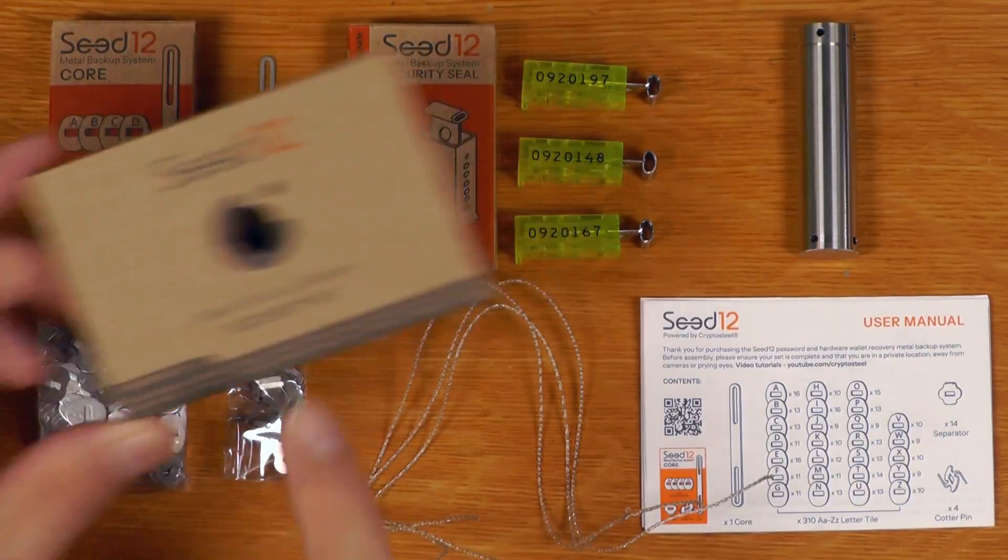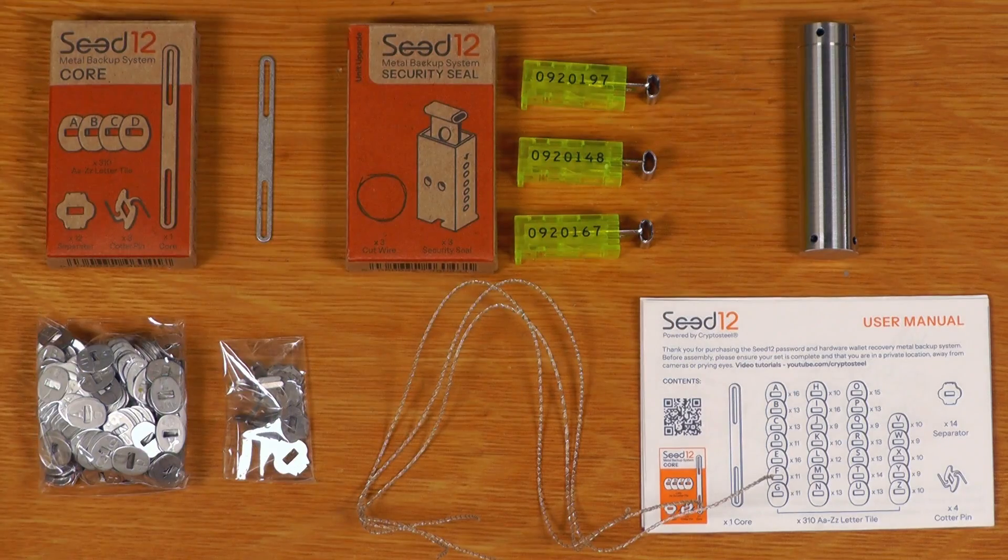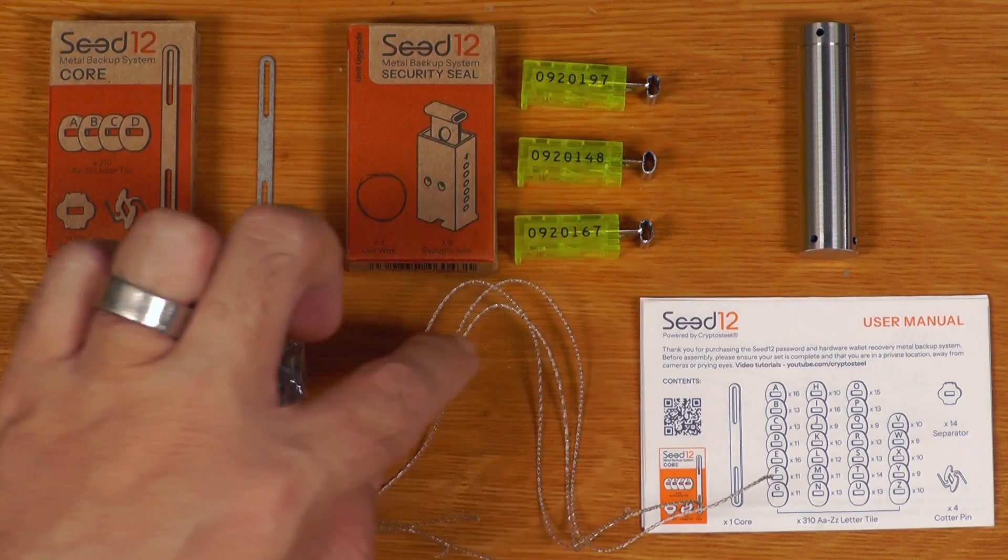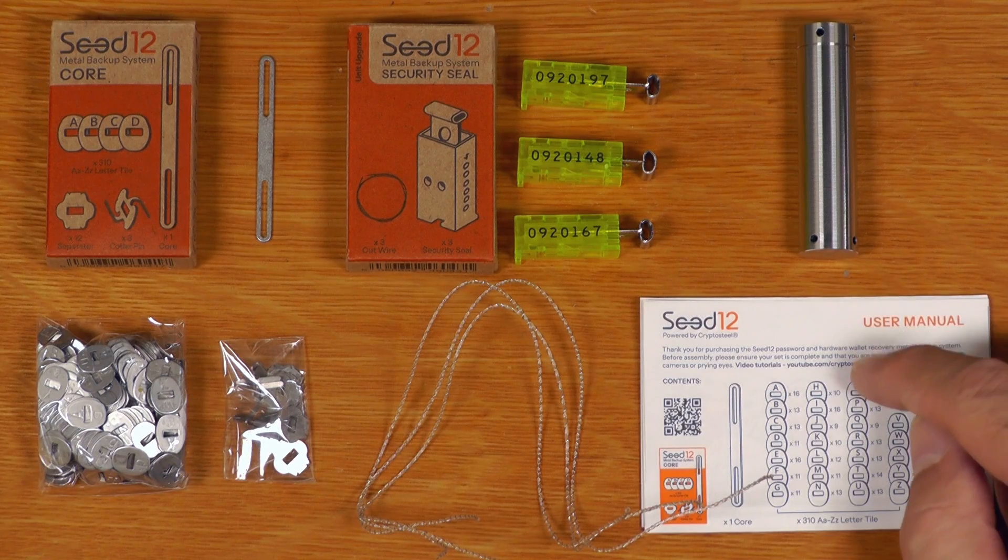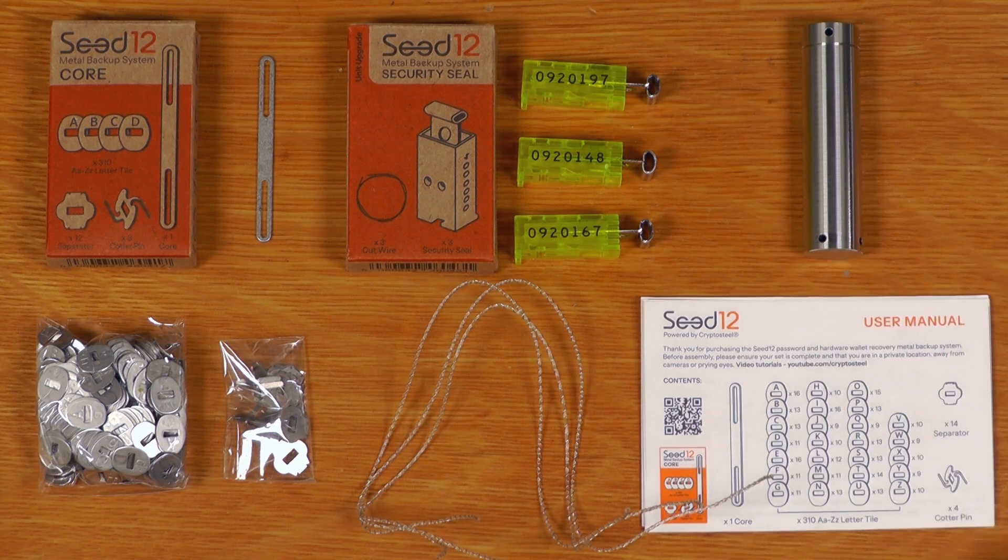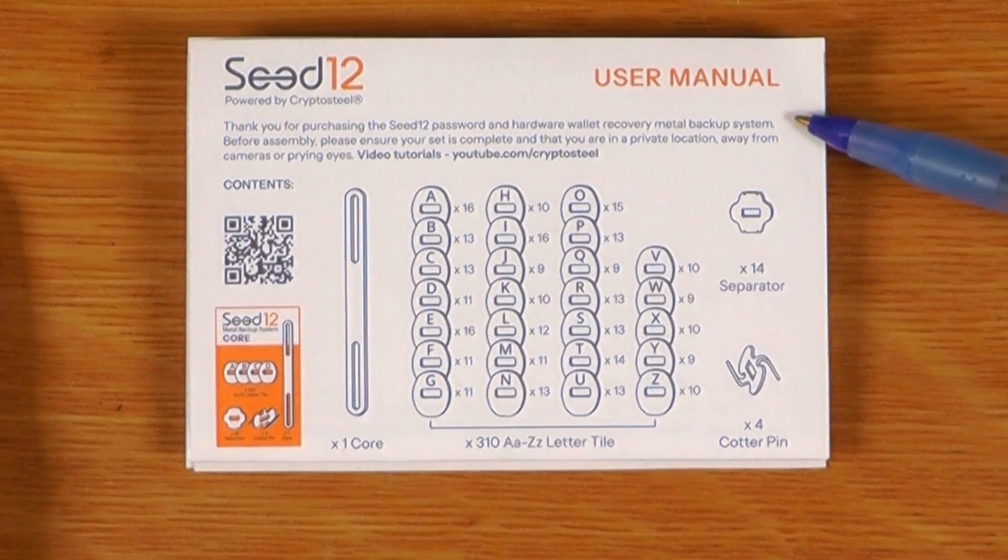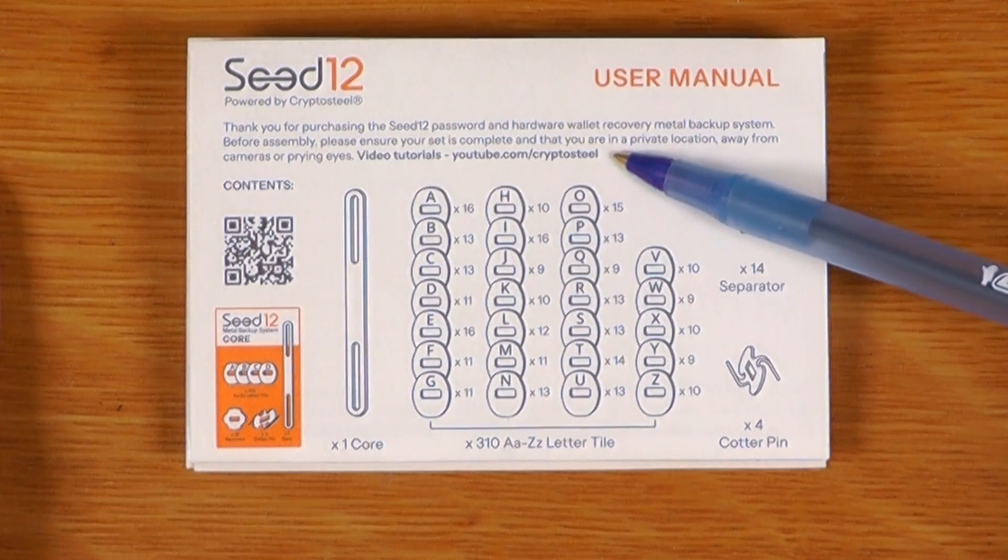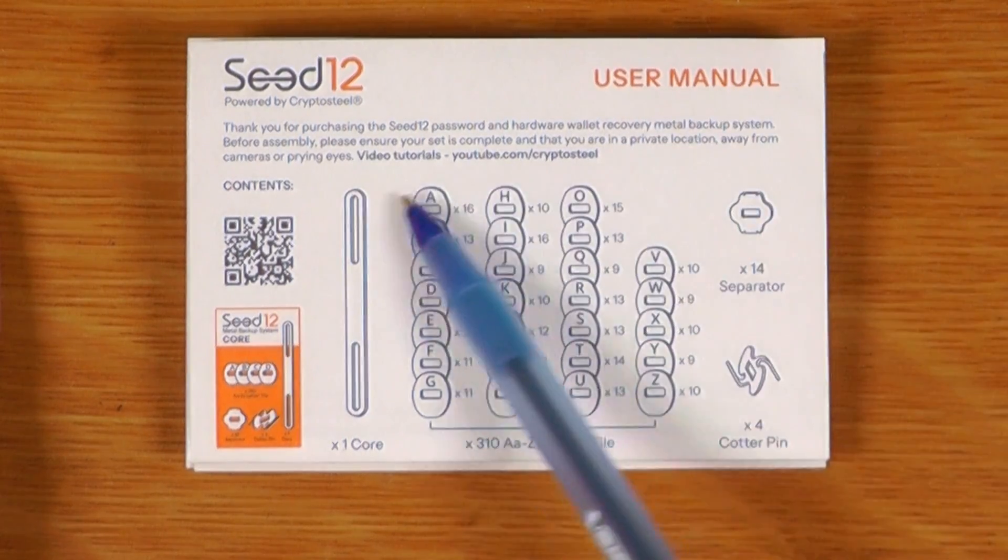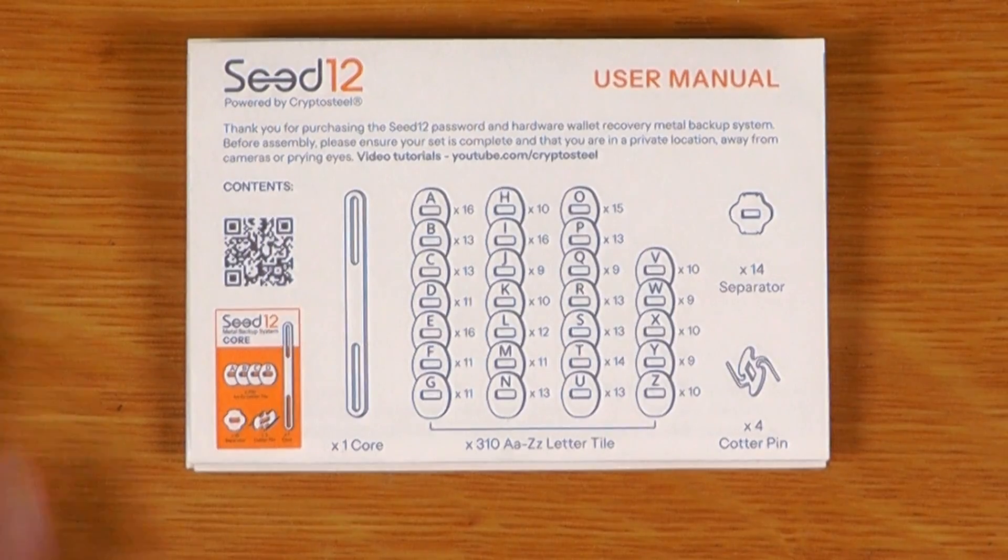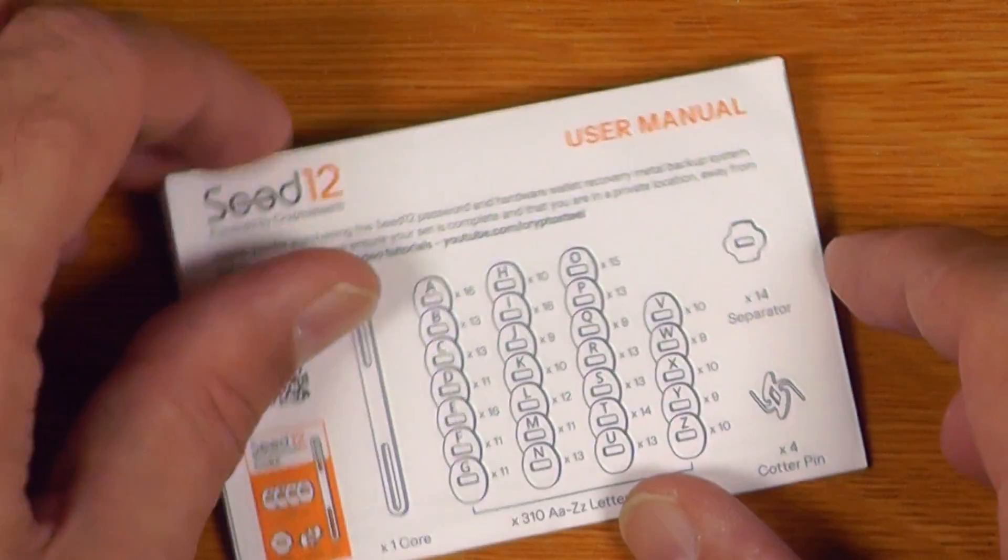All right, so basically this is everything that came with the security kit. We have the core kit that's all unpacked here. We have the security seal kit that's unpacked here, and the security kit also came with the instruction manual and the capsule for the Seed12. So, let's show you how it all works. While I think this is pretty self-explanatory, they do have some good warnings here saying, you know, don't do this in front of a security camera or whatever. We have printed instructions, and they also have video tutorials on their YouTube channel, as well as a QR code there.